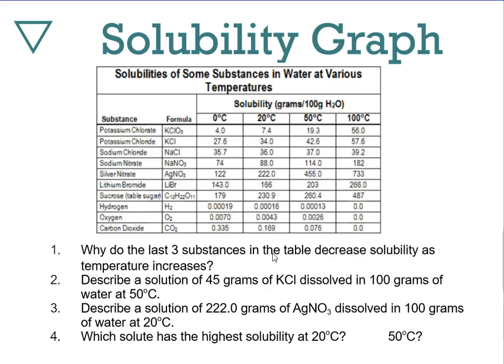Why do the last three substances decrease in solubility as temperature increases? Because they're gases. As you give gases energy — as we learned in the gases unit — kinetic energy of the particles increases. If the kinetic energy of gas particles increases, you're essentially increasing the probability that they escape the solution.